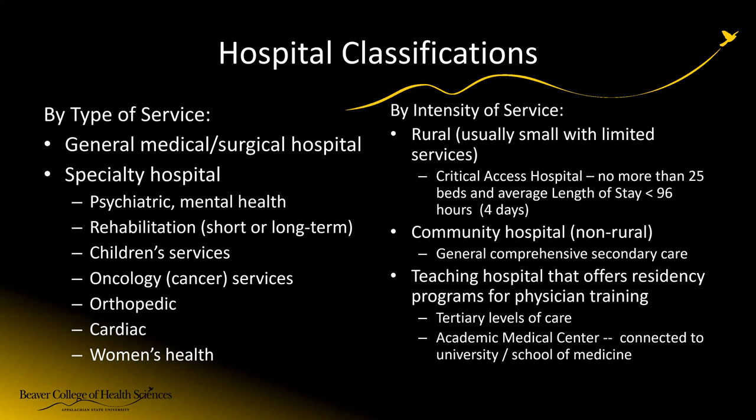There are psychiatric hospitals that provide purely mental health services. There are rehabilitation hospitals — for example, inpatient rehabilitation facilities or IRFs that provide care for a week or two or three after someone has a knee replacement, hip replacement, stroke, or traumatic brain injury. There are also long-term rehabilitation centers and skilled nursing facilities that provide long-term rehab services and assistance with activities of daily living, or ADLs. We also have other specialties: children's hospitals, cancer hospitals, orthopedic hospitals, cardiac or heart hospitals, and women's health — such as birthing centers.